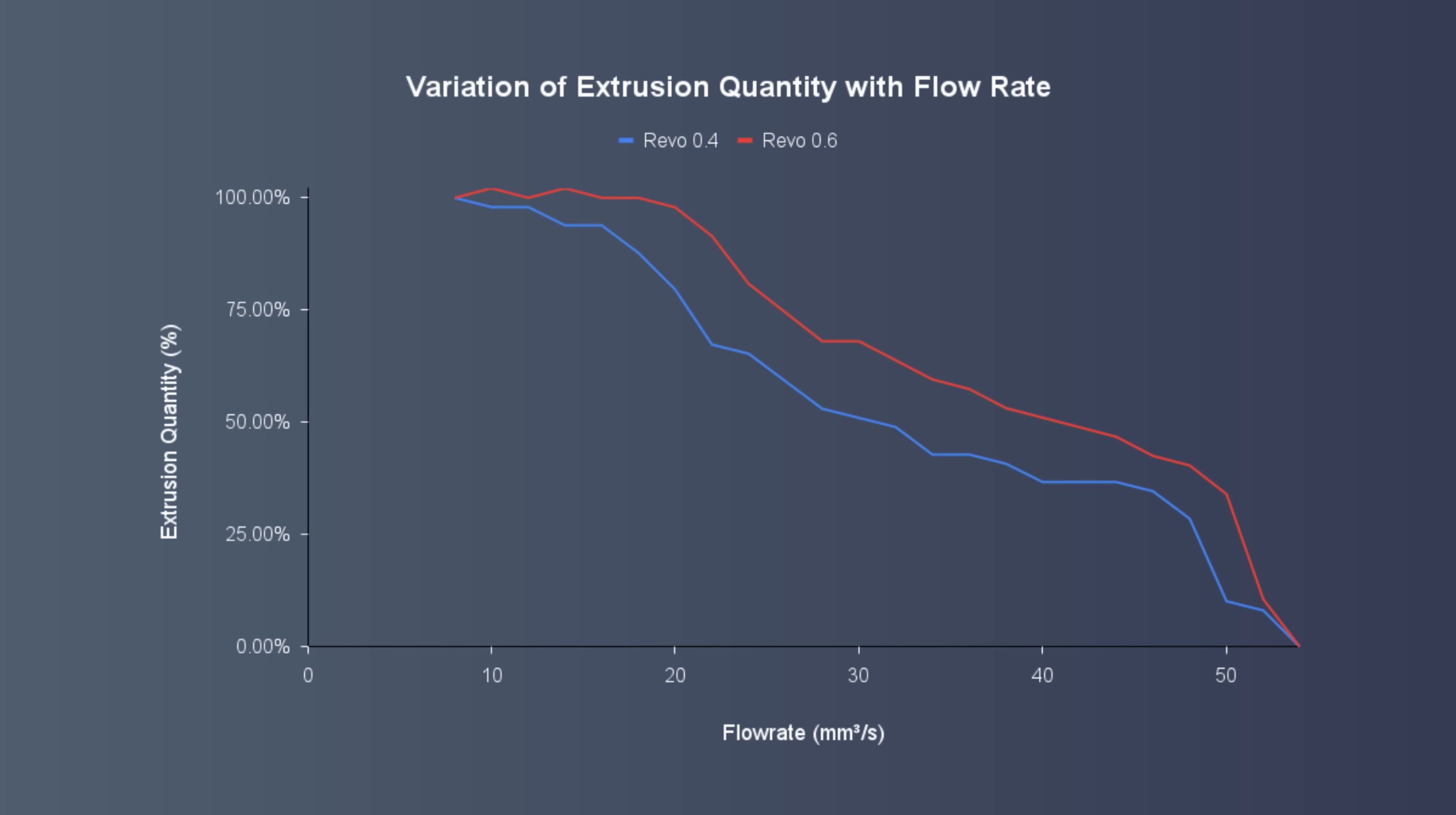Moving over to the Revo results you can see that Revo standard 0.4 and 0.6 do not perform quite as well as the standard V6 nozzles when they're in a Phaetus Rapido, with a 0.4mm Revo only getting to around 10-12mm cubed per second before some under-extrusion. Revo HF does see quite a significant improvement though. Revo HF 0.4 is typically a little better than even the standard 0.6 Revo and the 0.6 Revo shoots way above the others.